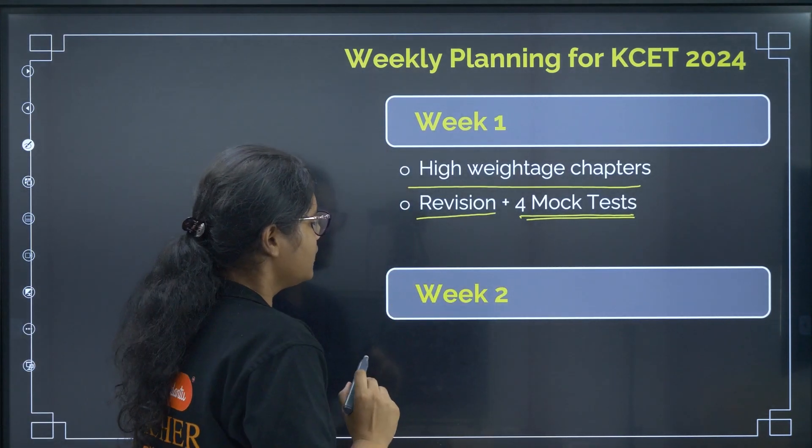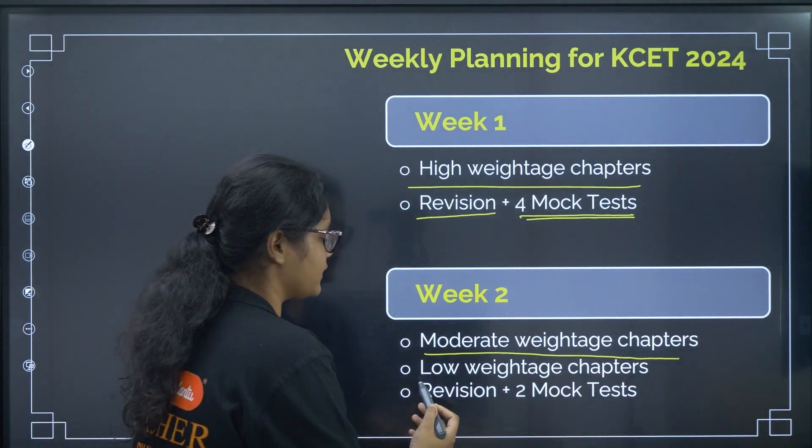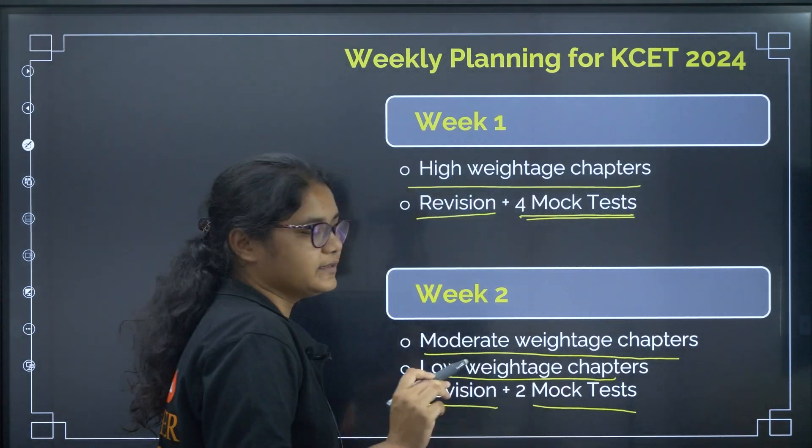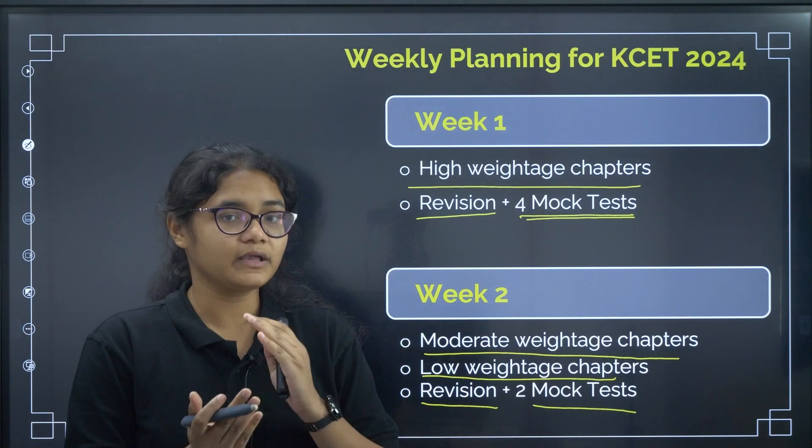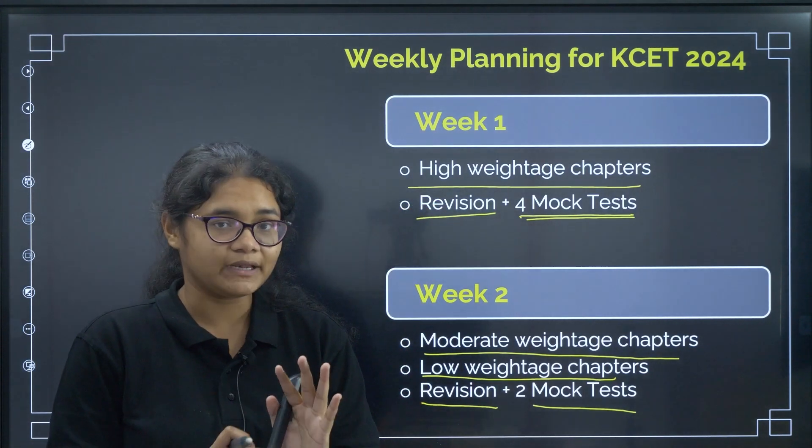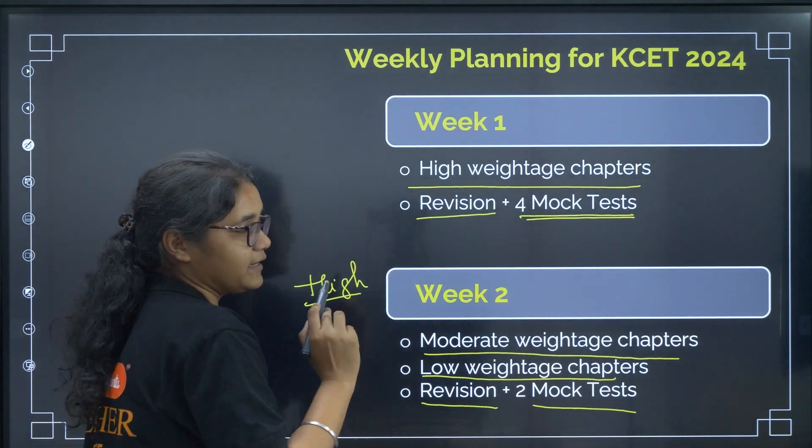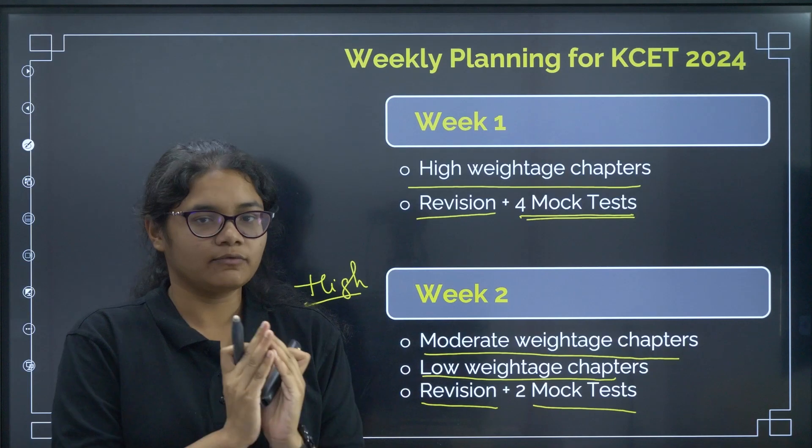In the week 2, we have to finish the moderate weightage chapters and then we have to give some time to low weightage chapters also. And then, revision and 2 mock tests in this period. This week 2, we have to go to low weightage topic only if you have done the high weightage chapters. If it is not completed, in week 2 also, you have to give importance to high weightage topics. These are the broad division of week 1 and week 2.